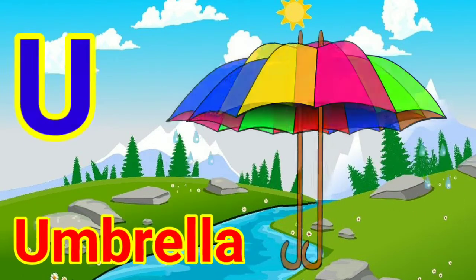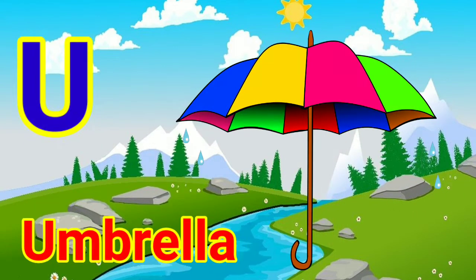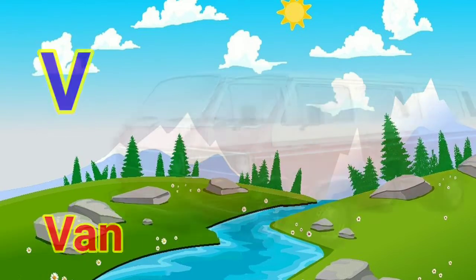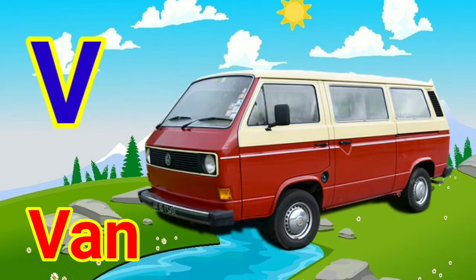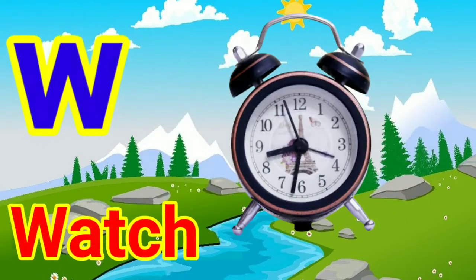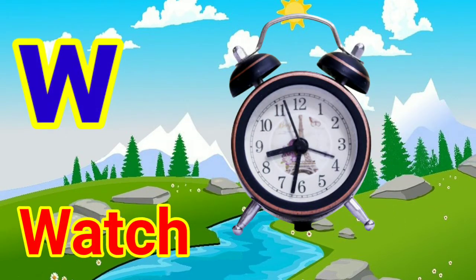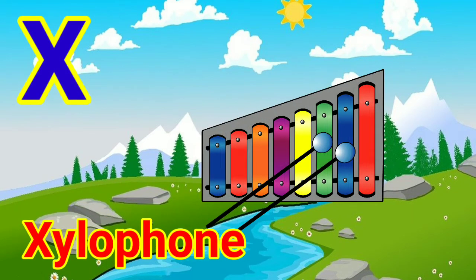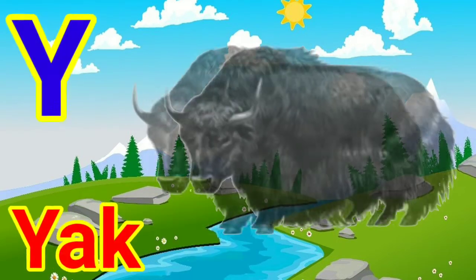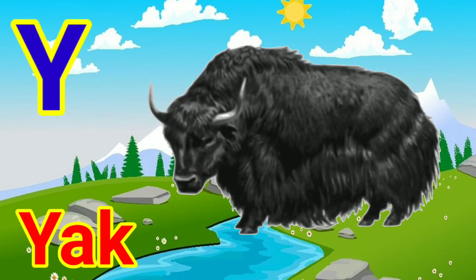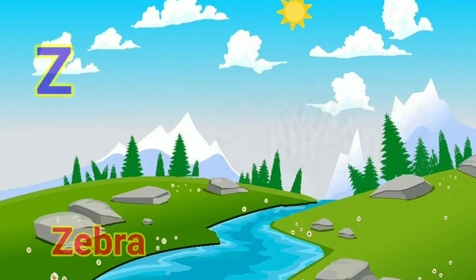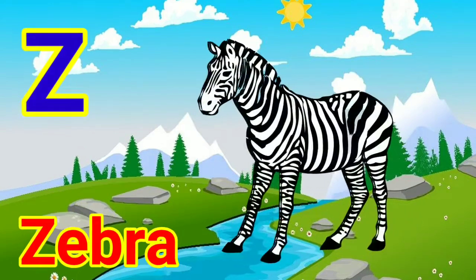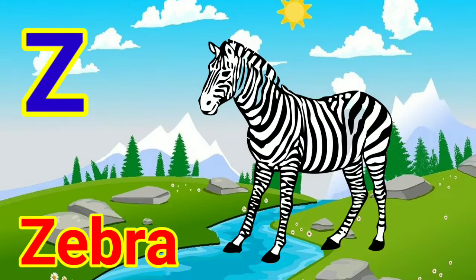T for train, U for umbrella, V for van, W for watch, X for telephone, Y for yak, Z for zebra.